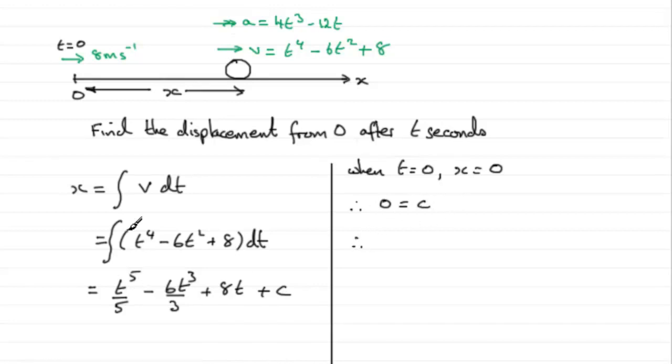So that means that the displacement x is equal to t to the power 5 over 5 minus, well, 6t cubed over 3. We could say that the 3 goes into the 6 twice, so might as well say minus 2t cubed, and then plus 8t. And the constant we know is 0. So there's our displacement after time t seconds.